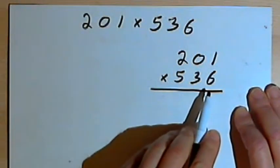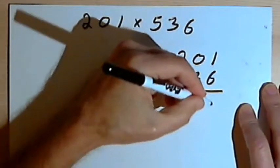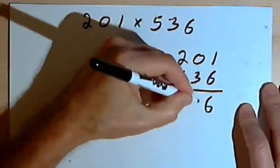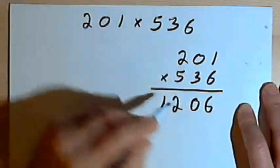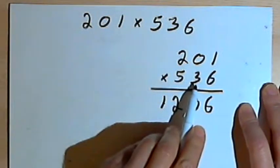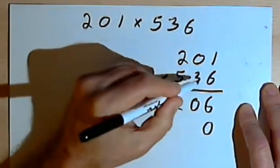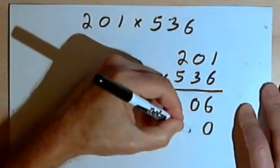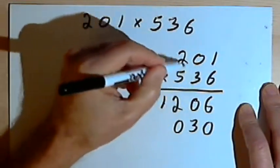So now I'll multiply by 6, the number in the units column. 6 times 1 is 6, 6 times 0 is 0, and 6 times 2 is 12. I'll go on to the tens column, I've got a 3 here, so I'll write a 0 to shift all my answers over. Then 3 times 1 is 3, 3 times 0 is 0, and 3 times 2 is 6.